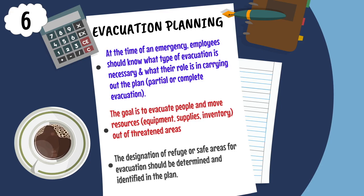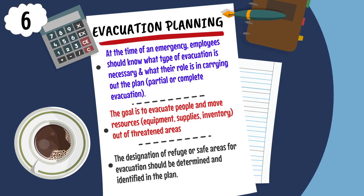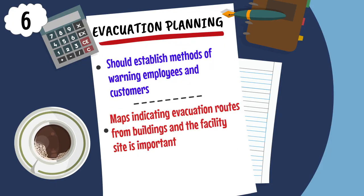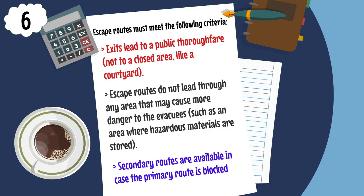The next element is evacuation planning. The goal is to evacuate people and move resources, equipment, supplies, and inventory out of threatened areas. The designation of refuge or safe areas should be determined and identified in the plan. Methods to warn employees and customers should be established, and maps indicating evacuation routes from buildings and facility sites should be included. Escape routes must have enough exits, must not be blocked, must be clearly marked, wide enough, and lead to a public thoroughfare. Secondary routes should be available in case the primary route is blocked.